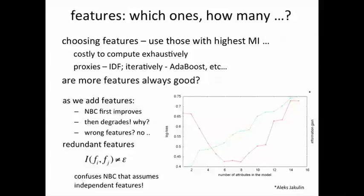In principle, one should be able to compute the best features either by computing the mutual information directly or using a proxy, as well as somehow figuring out which features are dependent and choosing those best features which are also independent. Many machine learning techniques do exactly this. We don't have time to go into the techniques in detail, but the idea should be clear by now.